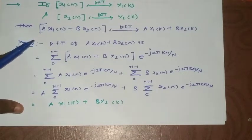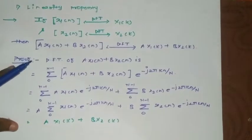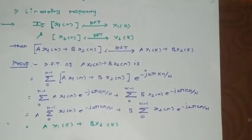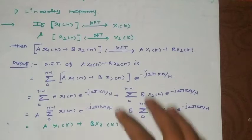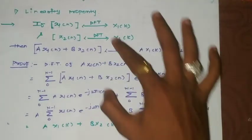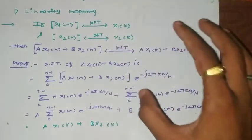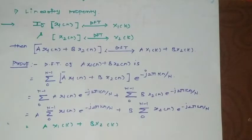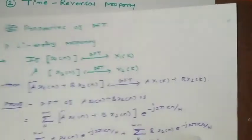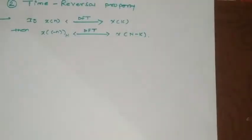Finally, we get aX1(k) + bX2(k), which completes the proof of the linearity property. Whenever linearity properties are asked for any transform, we follow the same process — only the formulas change. Now let us take the second property: time reversal.